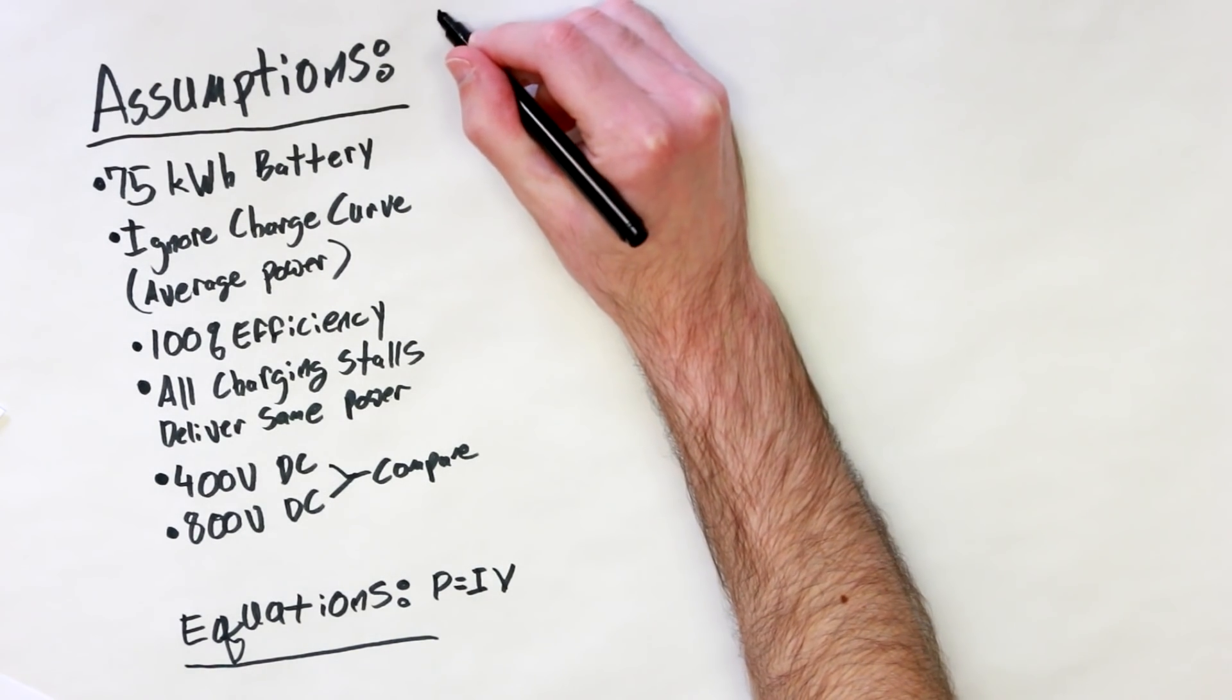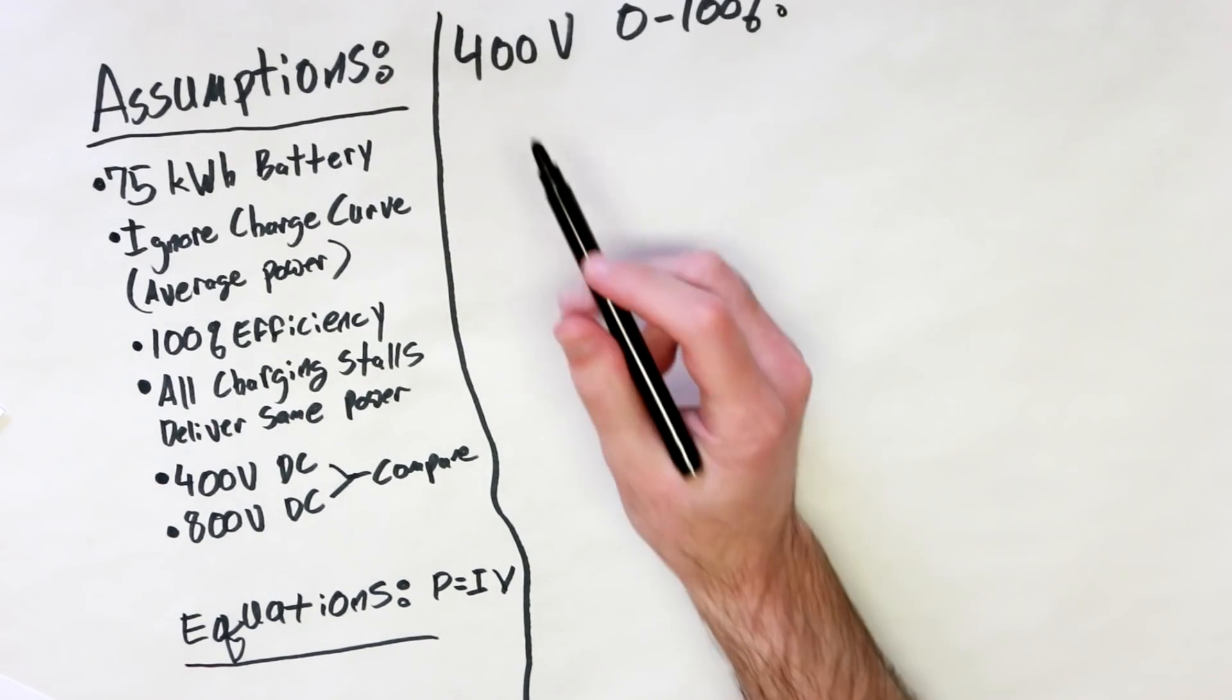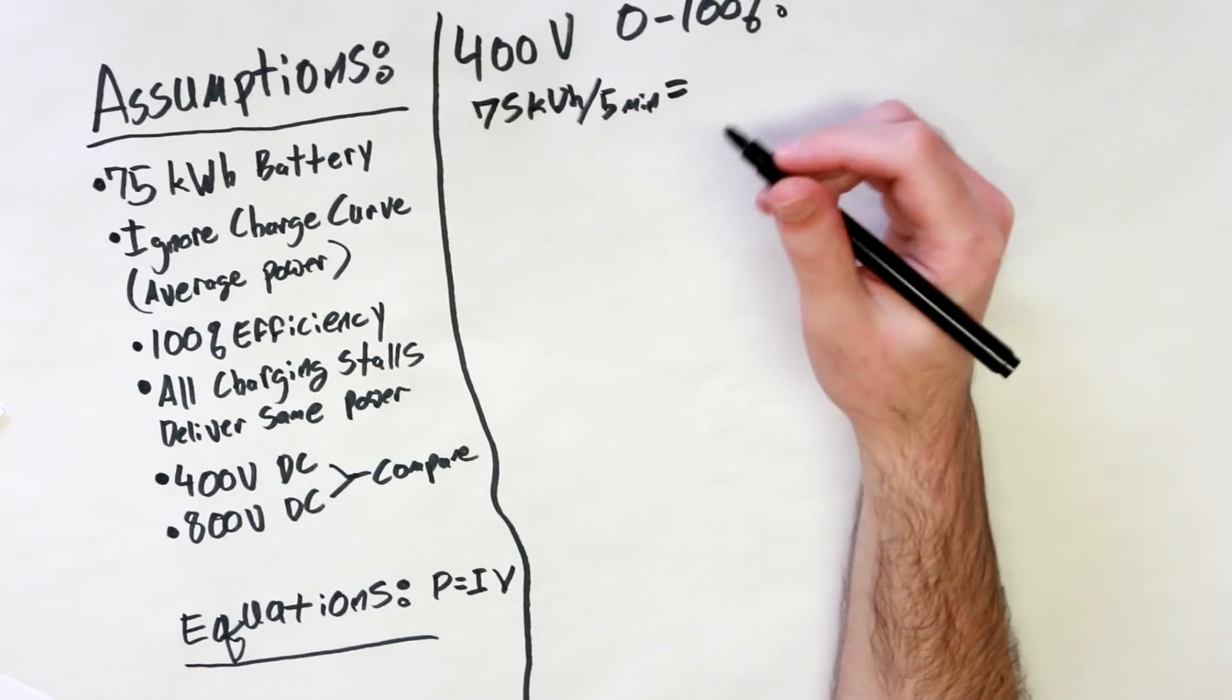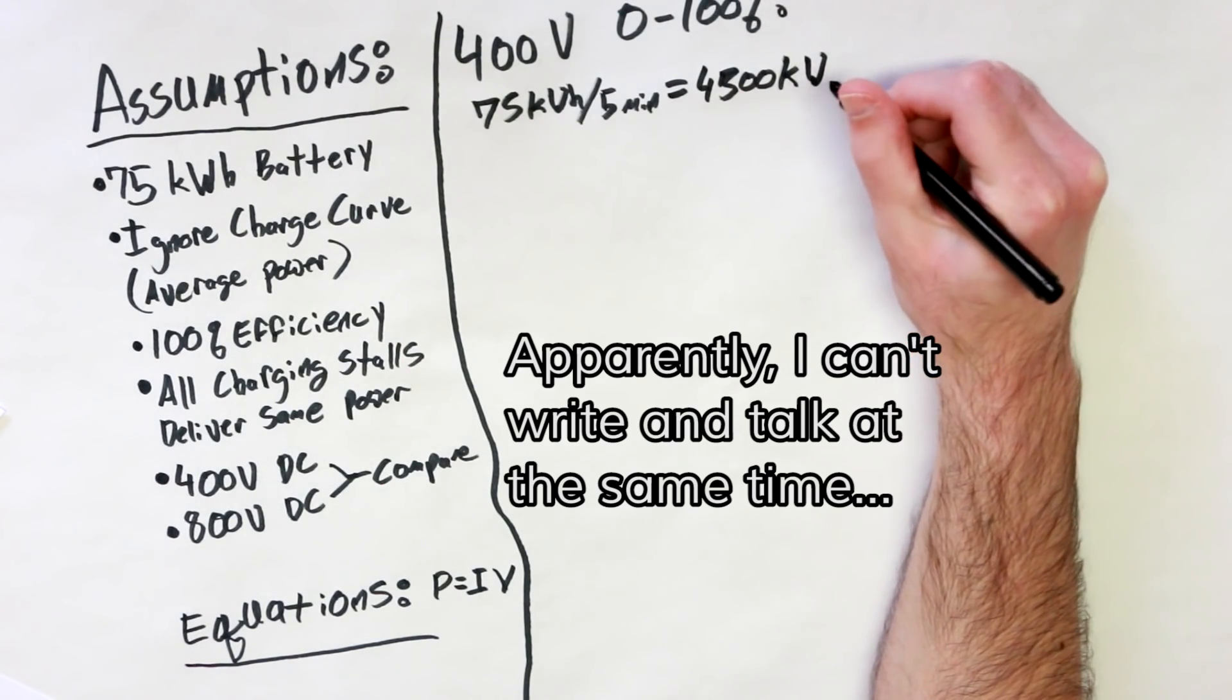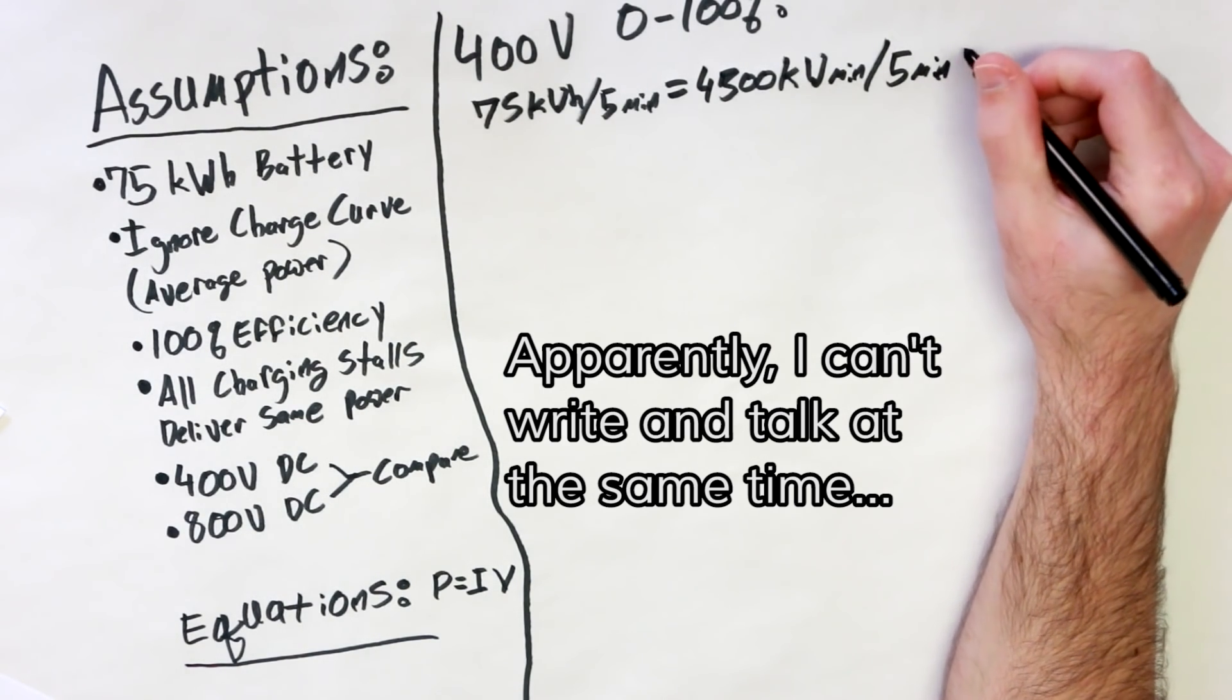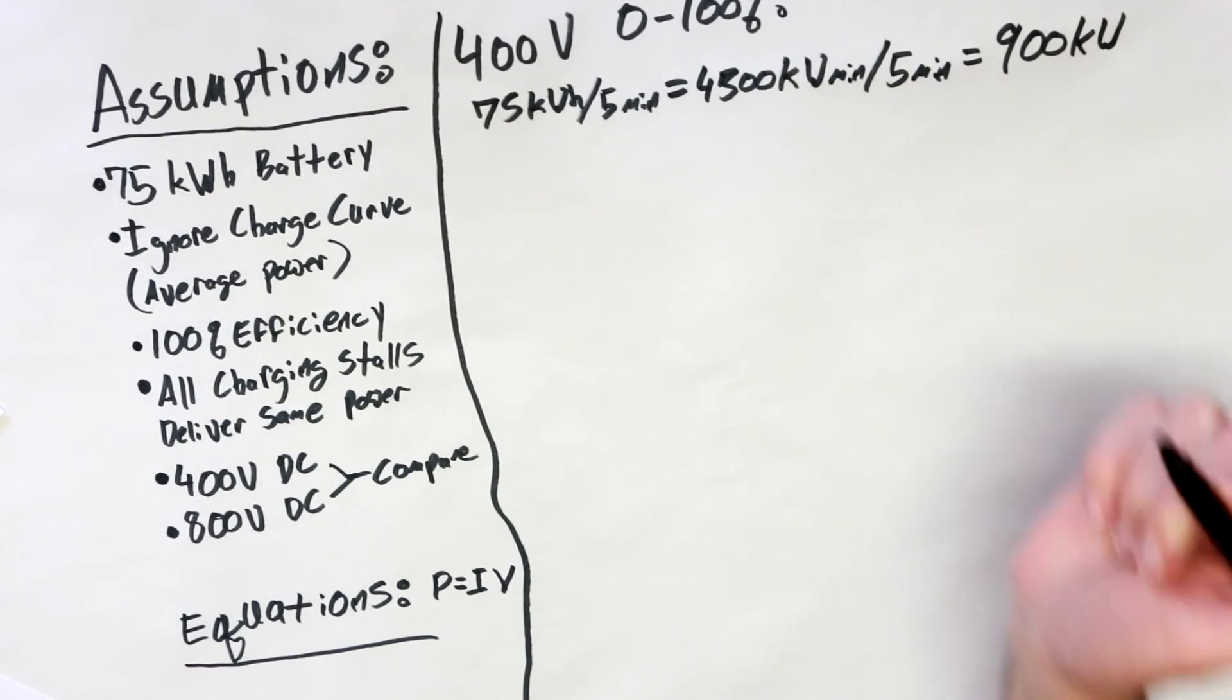When most people talk about electric vehicle charging times, they tend to be referring to the zero to 100% charge time, which I mean that's not really something you do very frequently, but since that's what most people seem to talk about, we'll start there. So with the current 400 volt standard and a zero to 100% charge cycle, 75 kilowatt hours divided by 5 minutes equals 4500 kilowatt minutes divided by 5 minutes gives us 900 kilowatts, because the minutes cancel and you're just left with 5 and 4500. To deliver 75 kilowatt hours to a car in 5 minutes, you would need to have an average charge power of 900 kilowatts.